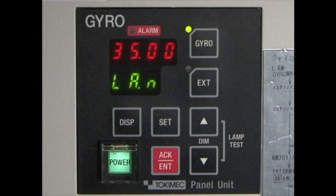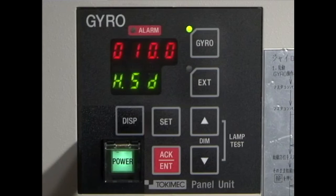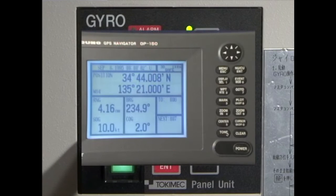Gyro compasses are subject to latitude and velocity errors. These error margins are usually corrected automatically using GPS latitude and log speed signals.